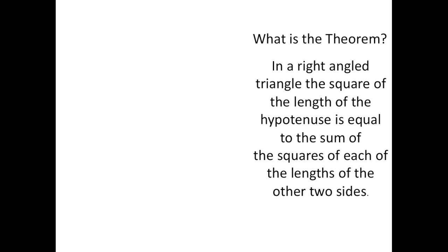Pythagorean theorem. So what is the theorem? The theorem basically says that in a right angle triangle, the square of the length of the hypotenuse is equal to the sum of the square of each of the lengths of the other two sides.